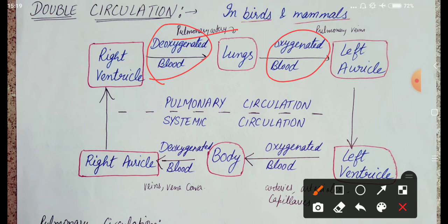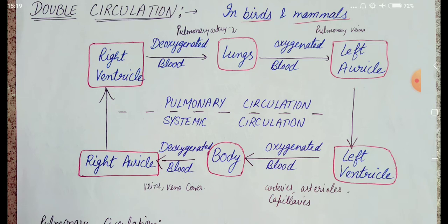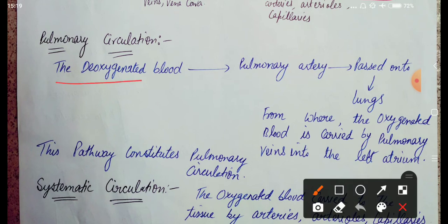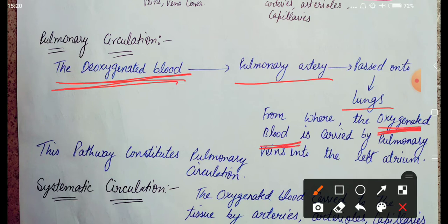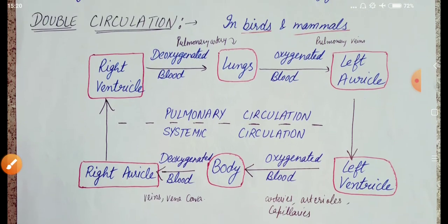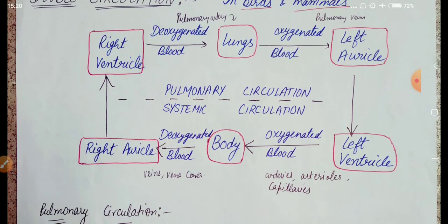So that is called pulmonary circulation. With the help of the pulmonary artery, the deoxygenated blood enters the lungs — लंग्स ने deoxygenated blood को oxygenated blood में change किया — and then with the help of pulmonary veins, it enters the left auricle. Atrium and auricle are the same thing. So this is called pulmonary circulation.